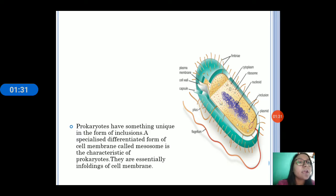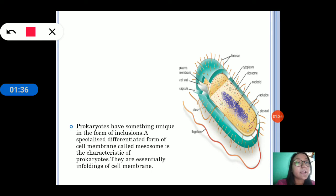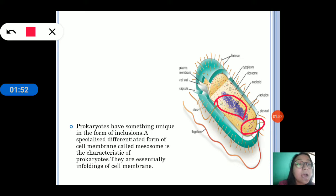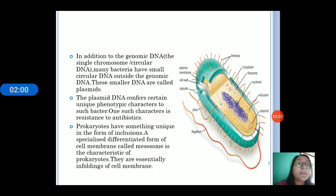All prokaryotic cells have genomic DNA, but in some bacteria they also have a small circular DNA called plasmid DNA. This plasmid DNA helps the bacteria in having phenotypic characters like resistance to antibiotics. It can replicate independently, and if it is not present in the bacteria, they can still survive.